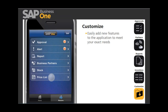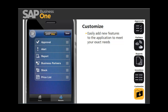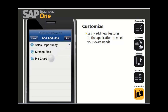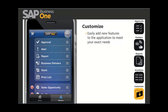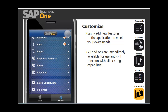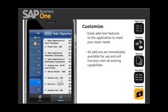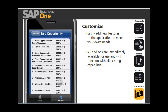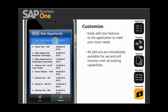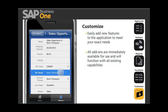Working with your SAP partner, you can easily add new features to the application to meet your exact needs. Thanks to the solution's flexible technology, you're able to add customized modules by simply clicking the Edit button and selecting from the list of available add-ons. Seamless integration ensures all add-ons are immediately available for use and will function with all existing capabilities. For example, with this partner-developed Sales Opportunity add-on, you get an at-a-glance view of your sales pipeline, and you can drill into an opportunity for more detail.